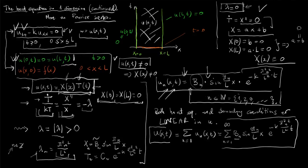What we showed last time is that when the sum is finite, it is a solution to the heat equation and the boundary conditions. What remains is to impose that u satisfies the boundary condition on the t=0 axis. This means f(x) = u(x,0) must equal the series evaluated at t=0, giving f(x) = sum from n=1 to infinity of b_n · sin(nπ/L · x), since the exponential term equals 1 at t=0.